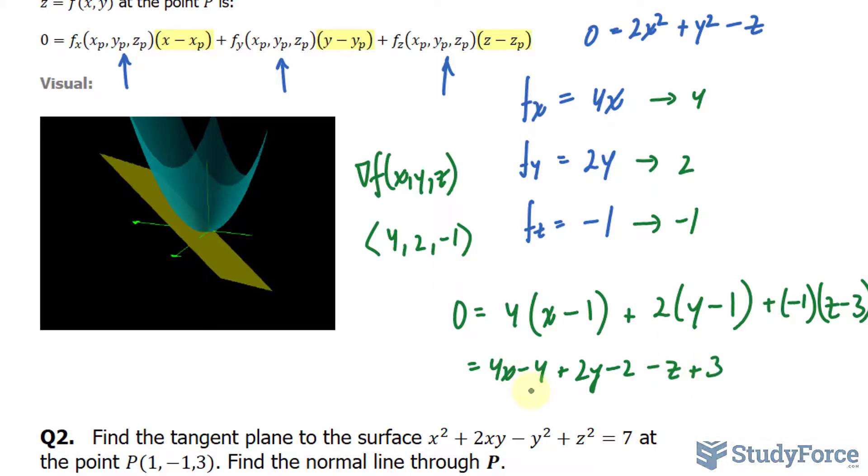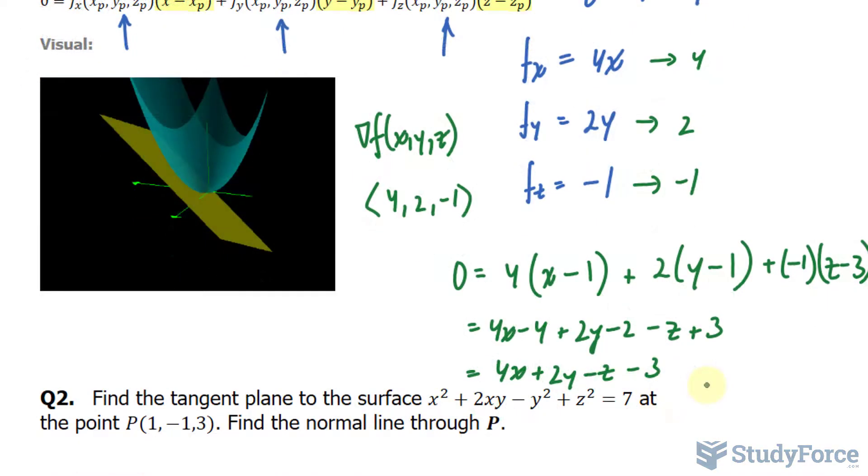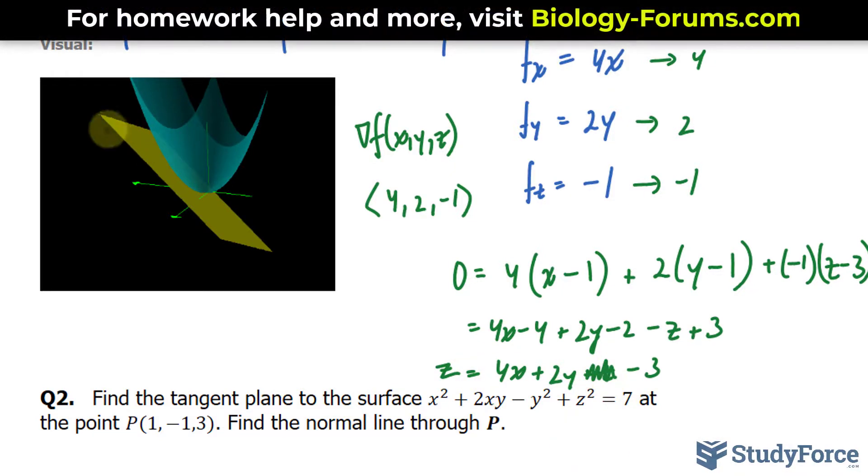Minus 4 minus 2 is minus 6 plus 3 is negative 3, so 4x plus 2y minus z minus 3. And as a final touch, you can bring this negative z over, where we have z equals 4x plus 2y minus 3. This equation right here represents this linear plane.